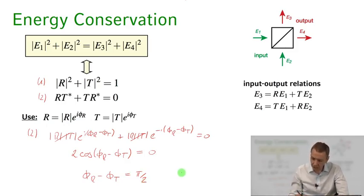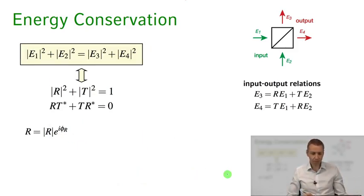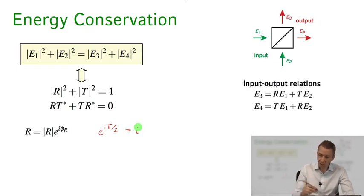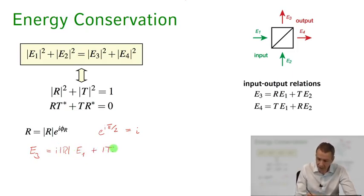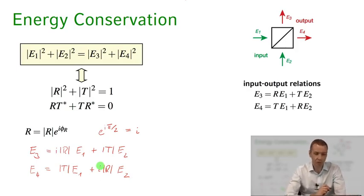Setting the transmission phase shift φt to zero, the reflection phase shift must be π/2 to guarantee unitarity. So the reflection coefficient becomes |r|·e^(i·π/2) = i·|r|, giving a 90-degree phase shift in reflection. The output field on port 3 is then i·|r|·e1 + |t|·e2, and correspondingly e4 = |t|·e1 + i·|r|·e2. These are the input-output relations connecting the fields on ports 3 and 4 to the fields on ports 1 and 2.